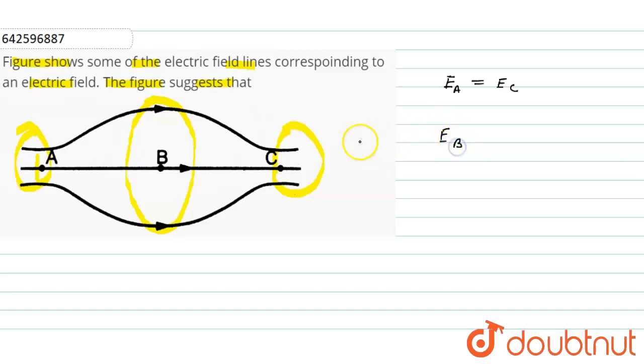So we can write that the electric field at point B is less than the electric field at point A and the electric field at point C.